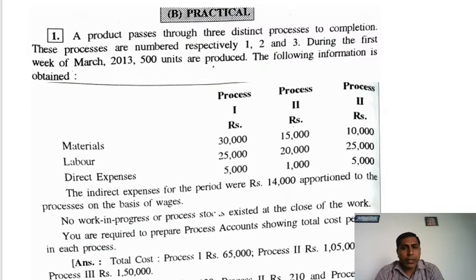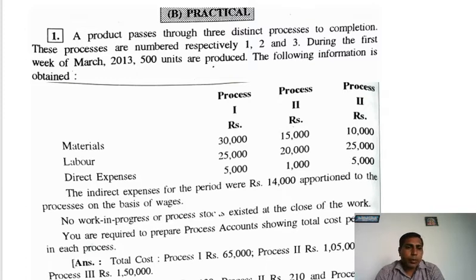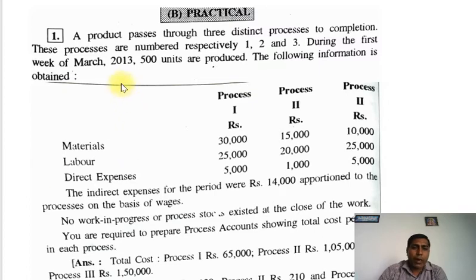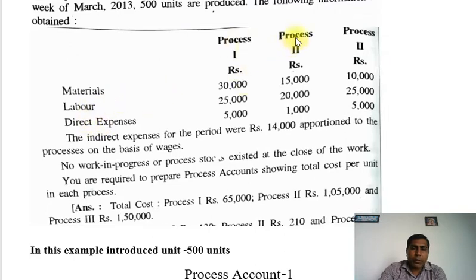So in this lecture I have chosen example number one from your book. Now I will read the information related to our example, and after reading all the information I will start our calculation step by step. A product passes through three distinct processes to completion; these processes are numbered respectively one, two, and three. During the first week of March 2013, 500 units are introduced.